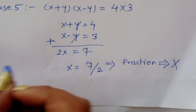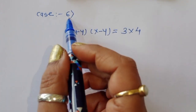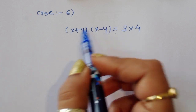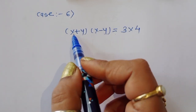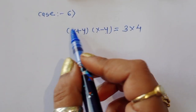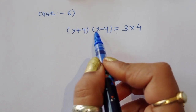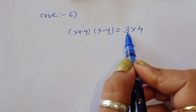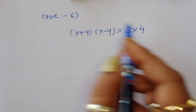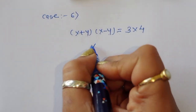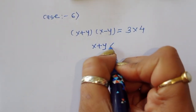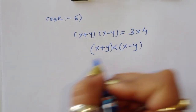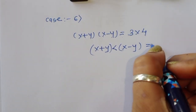Case 6: (x + y)(x - y) = 3 × 4. Comparing LHS and RHS, x + y = 3 and x - y = 4. Since 3 < 4, x + y is less than x - y, which violates the given condition. Therefore, this case is rejected.